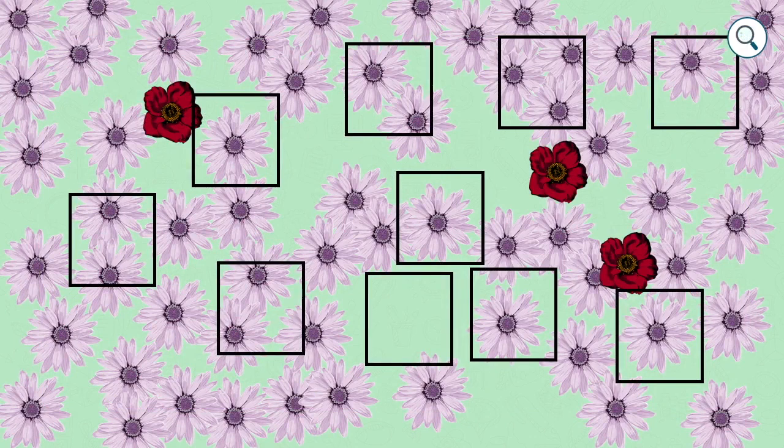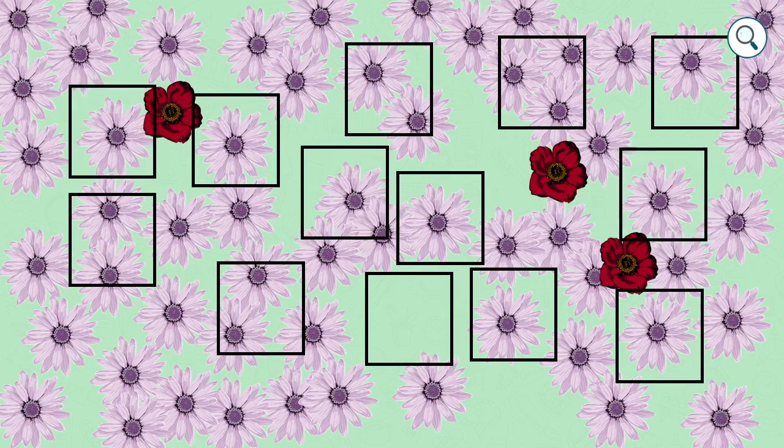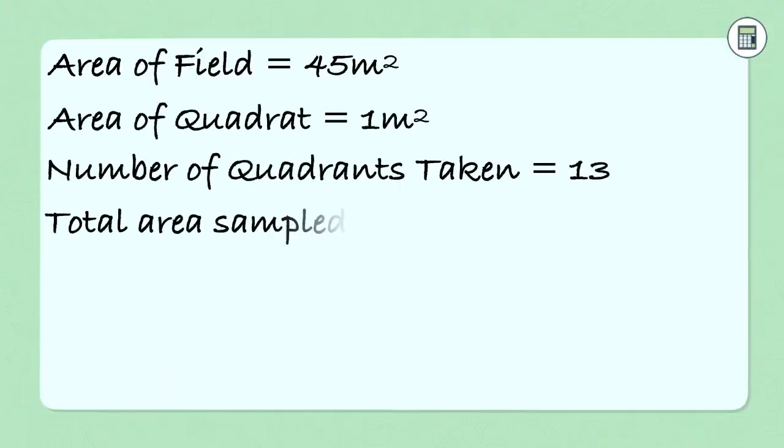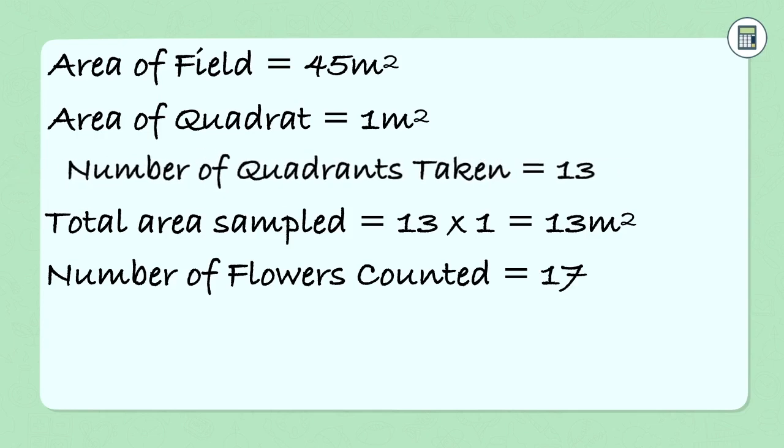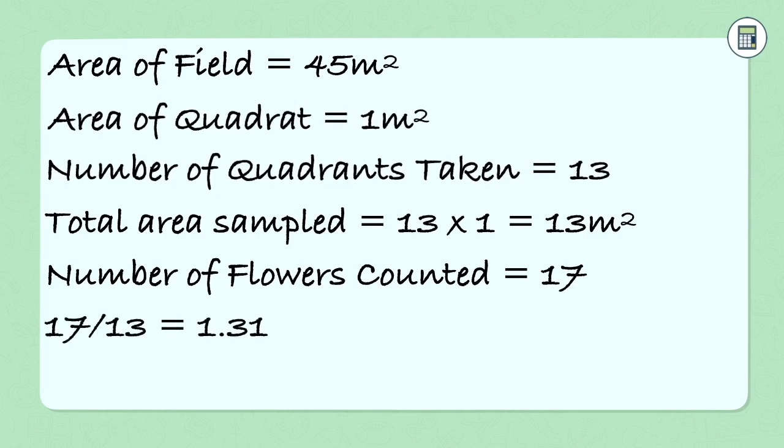If we go back to our flowers, these are the 10 quadrats we took originally. If we increase our sample size and add on 3 more, we've got 13 quadrats. In those 13 quadrats we have 17 purple flowers. You can pause the video and count for yourself if you'd like to. So the area of the field is still 45 meters squared. The area of the quadrat is still 1 meter squared. But now we have taken 13 quadrat samples. The total area sampled is 13 meters squared. There were 17 flowers in the 13 meter squared that we sampled. So we can now work out how many flowers there were in a typical 1 meter squared.